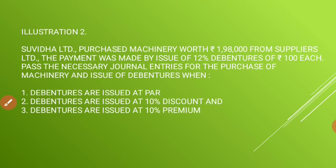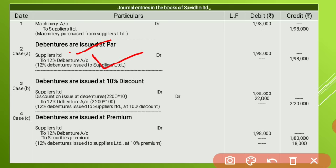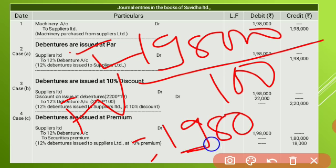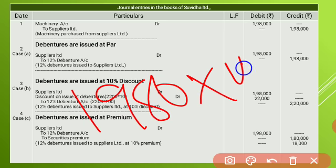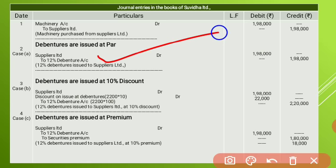Now let us go with the conditions. First condition: debentures are issued at par, meaning at face value only. The journal entry when debentures are issued at par is: Suppliers Limited Account Dr. to 12% Debentures Account — 1,98,000 rupees. The face value of a debenture is 100 rupees. So the number of debentures to be issued is 1,98,000 divided by 100 equals 1,980 debentures. Verification: 1,980 into 100 gives 1,98,000.